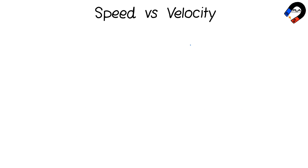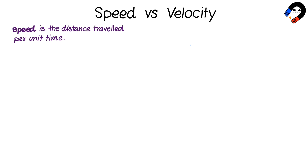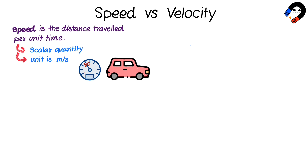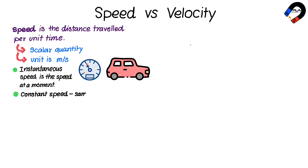Speed vs. Velocity. Speed is the distance traveled per unit time. Speed is a scalar quantity, which has only magnitude. Its unit is meters per second. When you are driving and you see the speed of a car at the speedometer of 80 kilometers per hour, which is instantaneous speed — the speed at a moment.